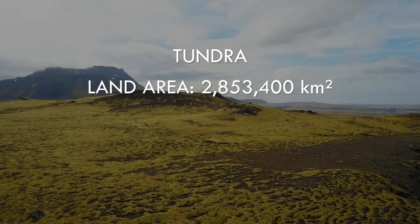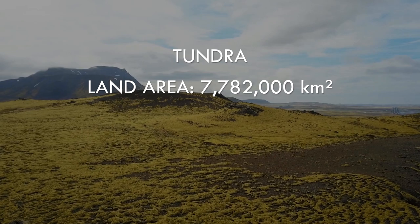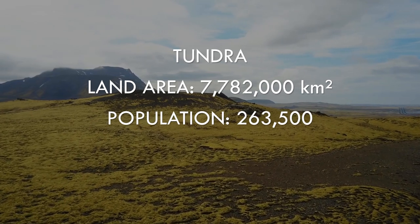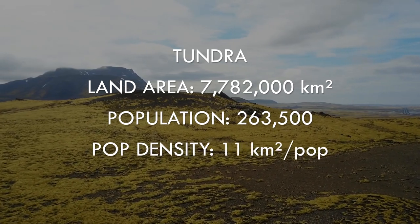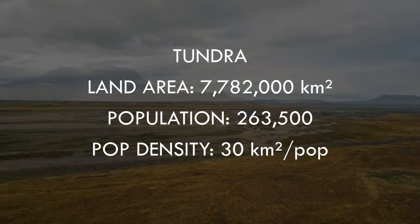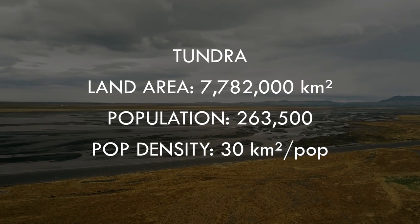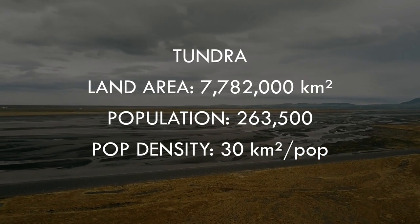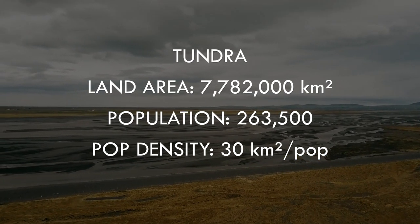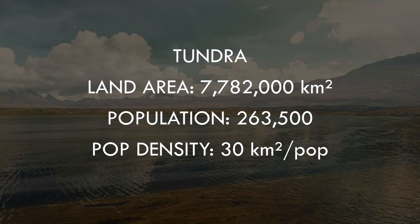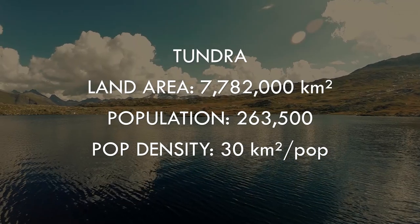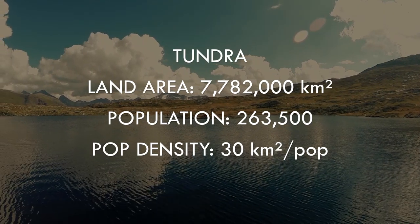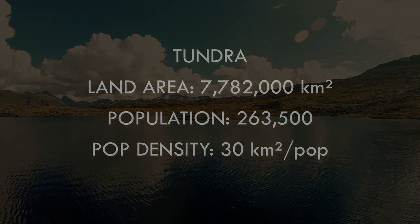Spread over such a vast area, this naturally produces a very low population density, but still orders of magnitude up from the ice cap. Note that the values for this zone and the ice cap are inverse, showing the number of square kilometres per person, and not the usual persons per square kilometre.